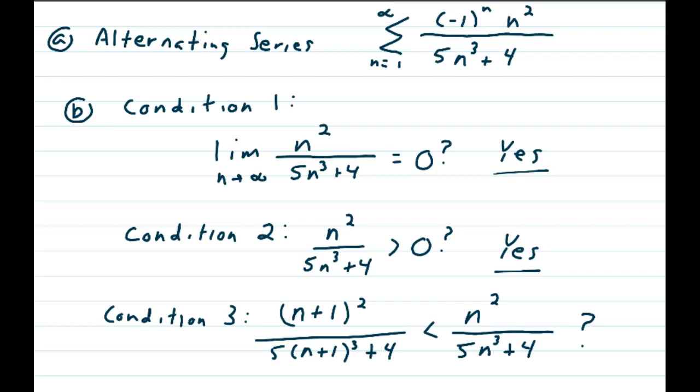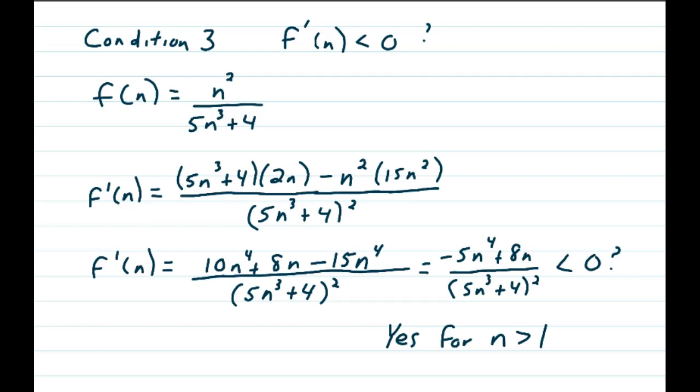You have a 5. You erase the n, replace it with n plus 1, cube that, and add 4. And ask yourself the question, is that smaller than n squared over 5n cubed plus 4? And that's quite a mess. When the algebra gets difficult, I choose to check the derivative.